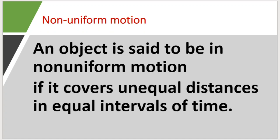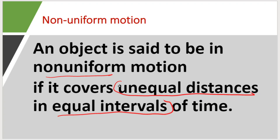Then, what is non-uniform motion? An object is said to be in non-uniform motion if it covers unequal distances in equal intervals of time. The best example is a city bus — when travelling by city bus, the distance covered in each five-minute interval is different. Same time intervals but different distances — that is non-uniform motion.